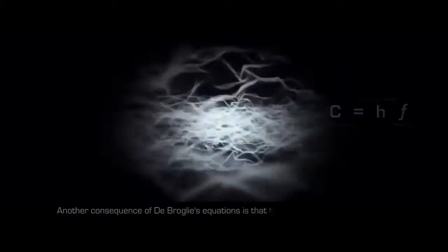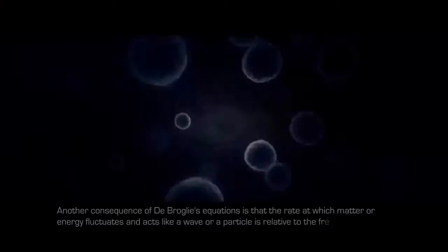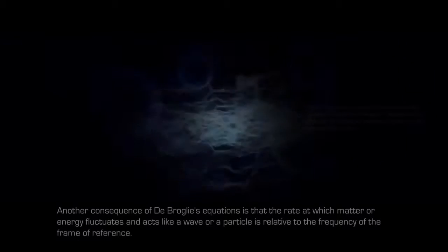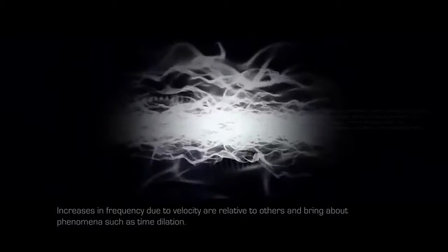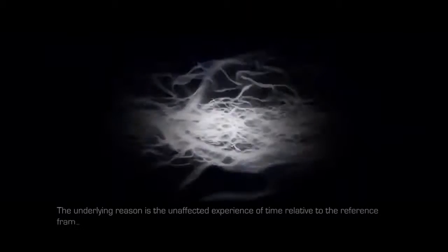Another consequence of de Broglie's equations is that the rate at which matter or energy fluctuates and acts like a wave or a particle is relative to the frequency of the frame of reference. Increases in frequency due to velocity are relative to others and bring about phenomena such as time dilation. The underlying reason is the unaffected experience of time relative to the reference frame, where space and time are properties of quanta and not the other way around.